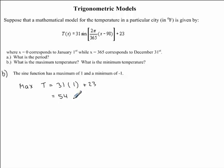We are going to do something very similar to find the minimum temperature. Once again, we leave the 31 on the outside. But to find the minimum temperature, we know that our sine function is going to be at its minimum value, which is negative 1. So, we can replace the sine function with its minimum value of negative 1. And once again, we need to add 23. 31 times negative 1 is equal to negative 31, plus 23. Negative 31, plus 23, is equal to negative 8.